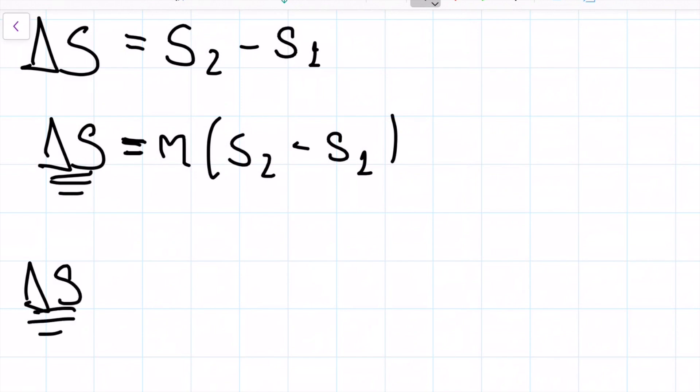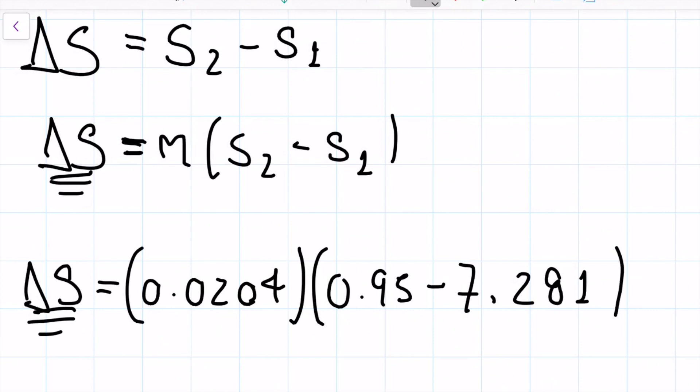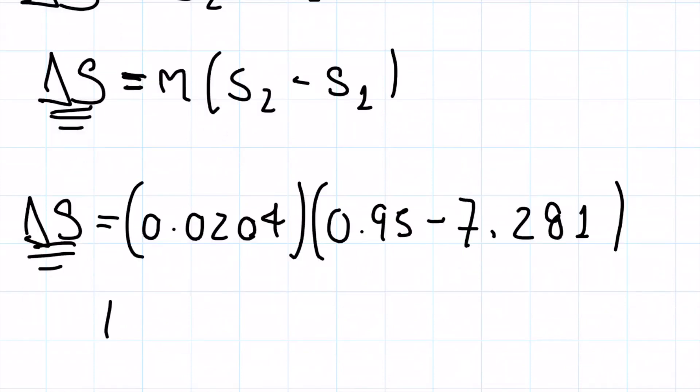So my big S is 0.0204, and then my second state S is 0.95, and my first state S is from the table 7.281. This is obviously going to be negative because my first state is way greater. And indeed what we get is negative 0.13.